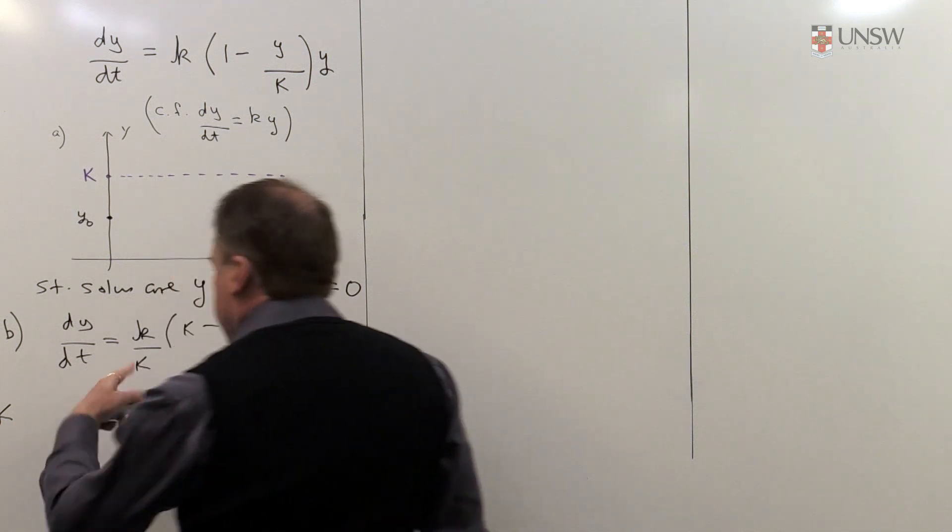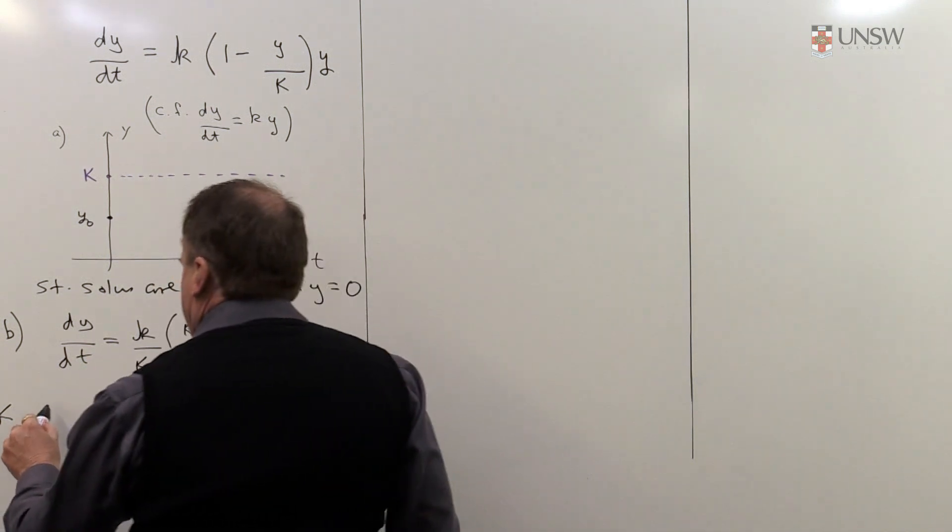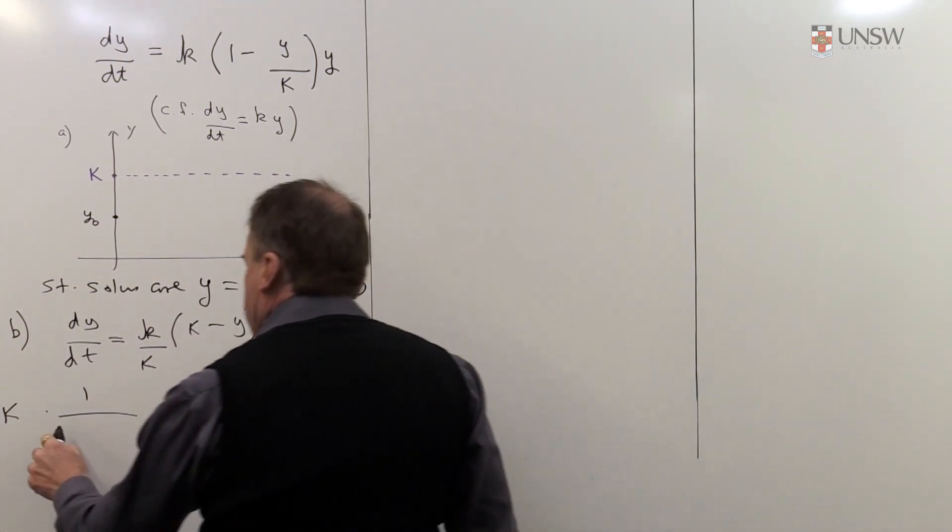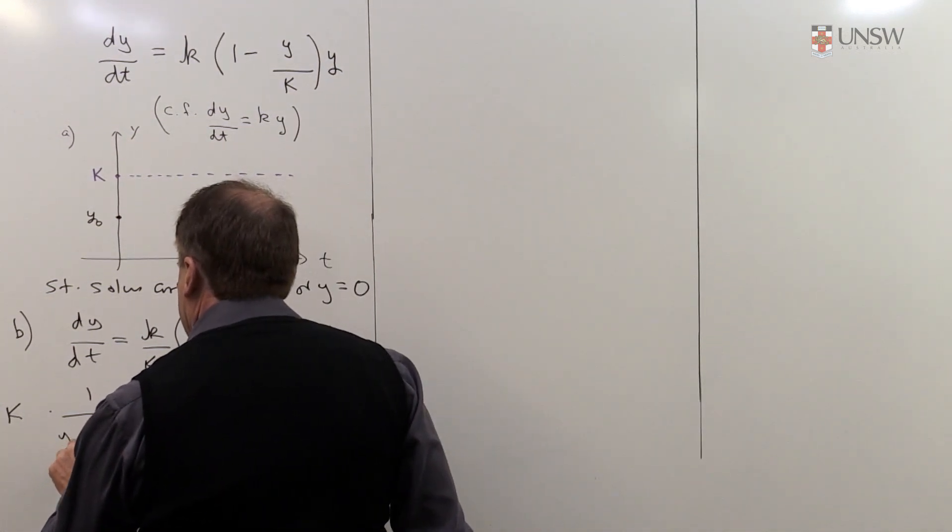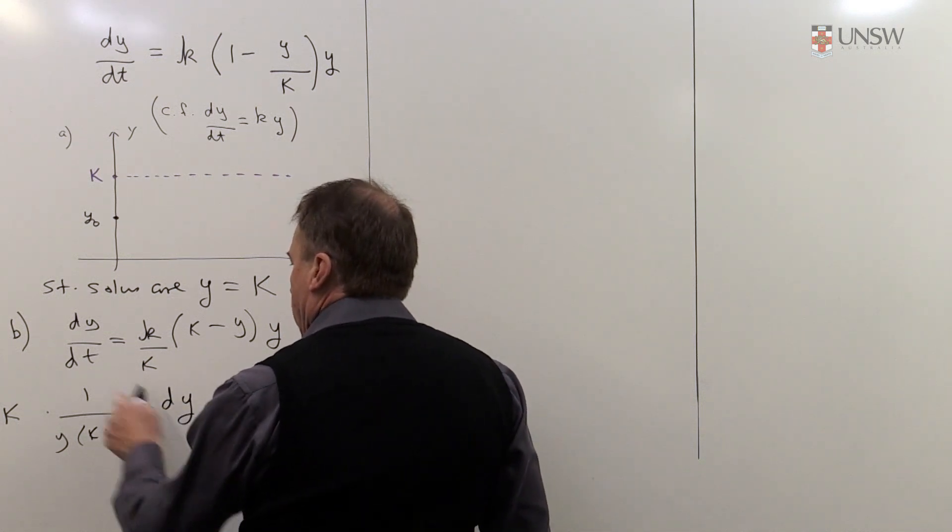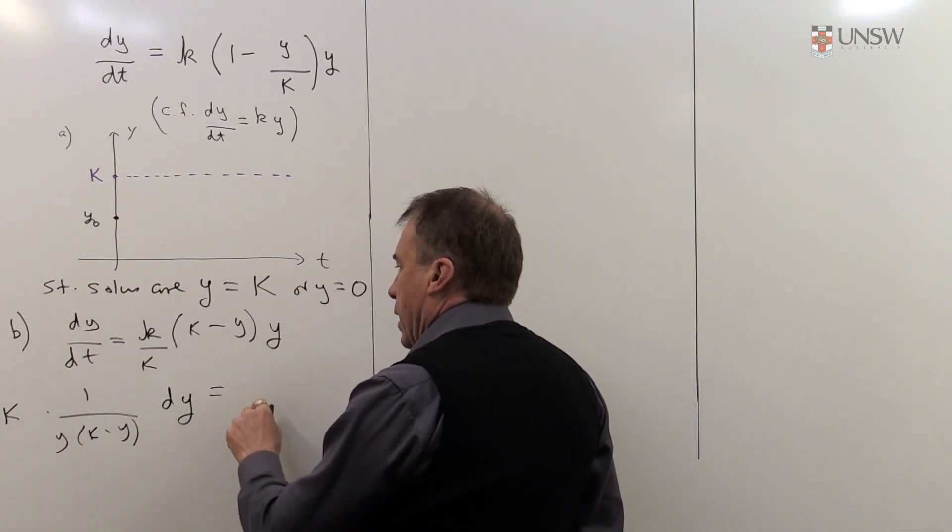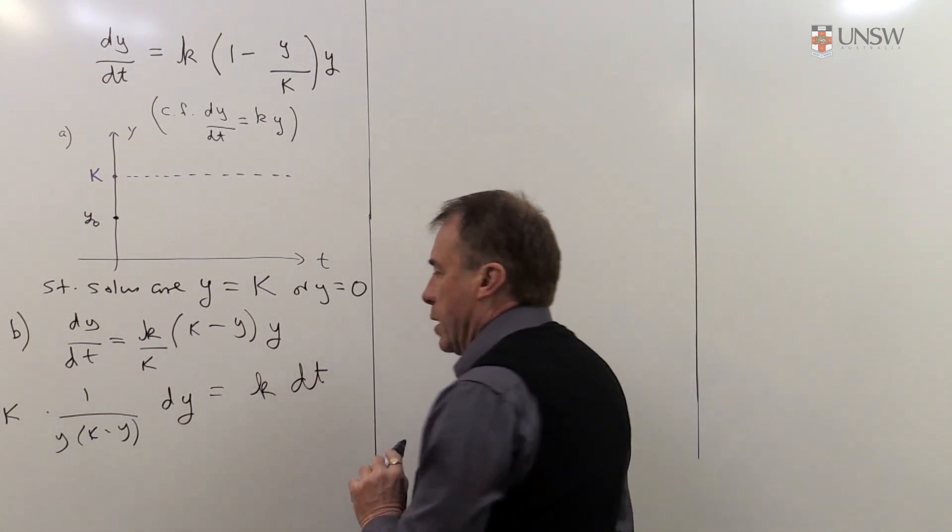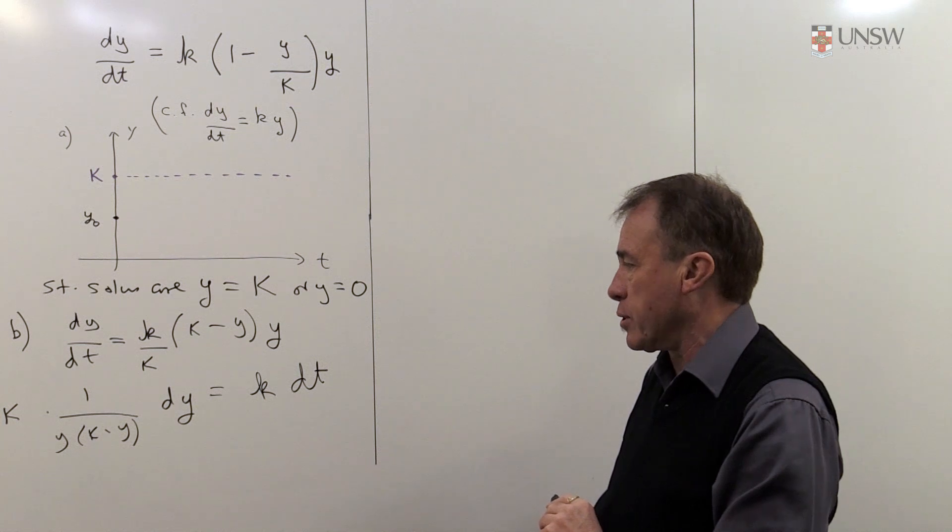And now I'm going to separate the variables. So I'm going to take the K across to the other side and I'm going to put a 1 over the y terms, which is y into capital K minus y. And I'll leave the dy element there. And over the other side, I've left with a little k and a dt. So we split the variables across.